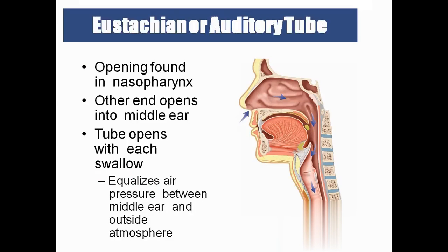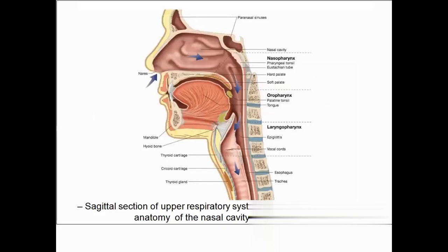The Eustachian tube connects the nasopharynx to the middle ear to equalize air pressure. Since we continuously take air through the nose, the Eustachian tube allows some air through to equalize the pressure in the middle ear.